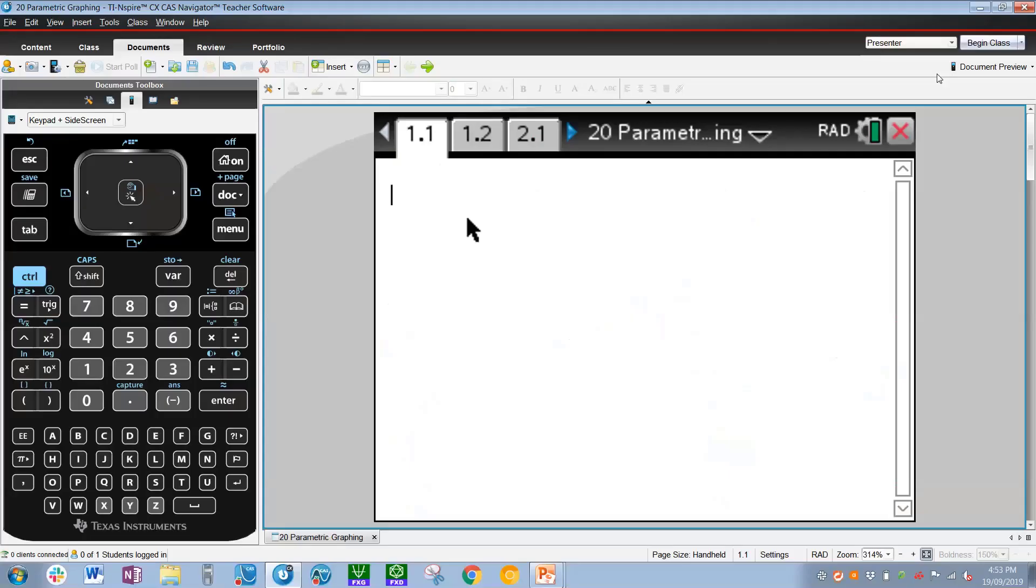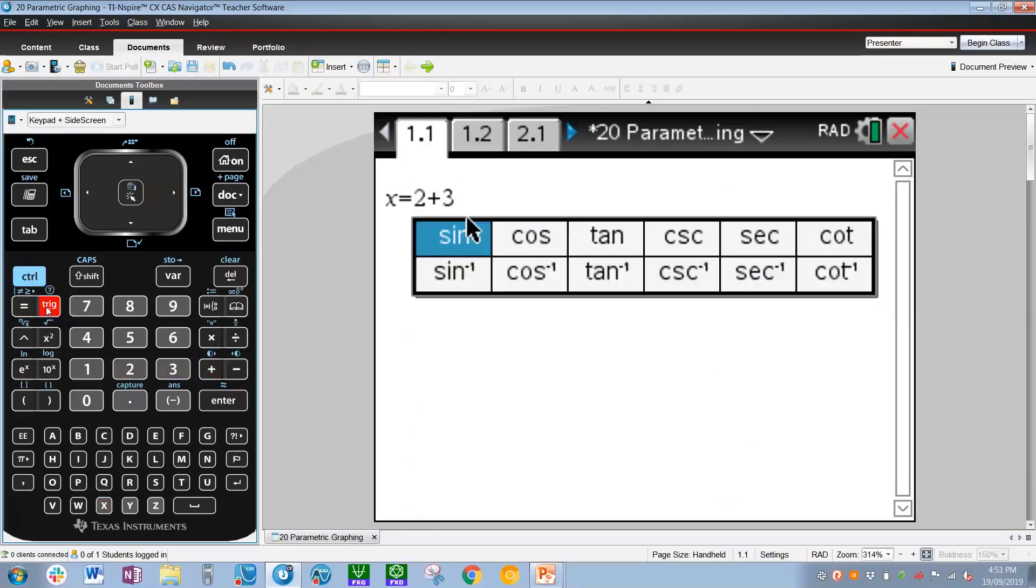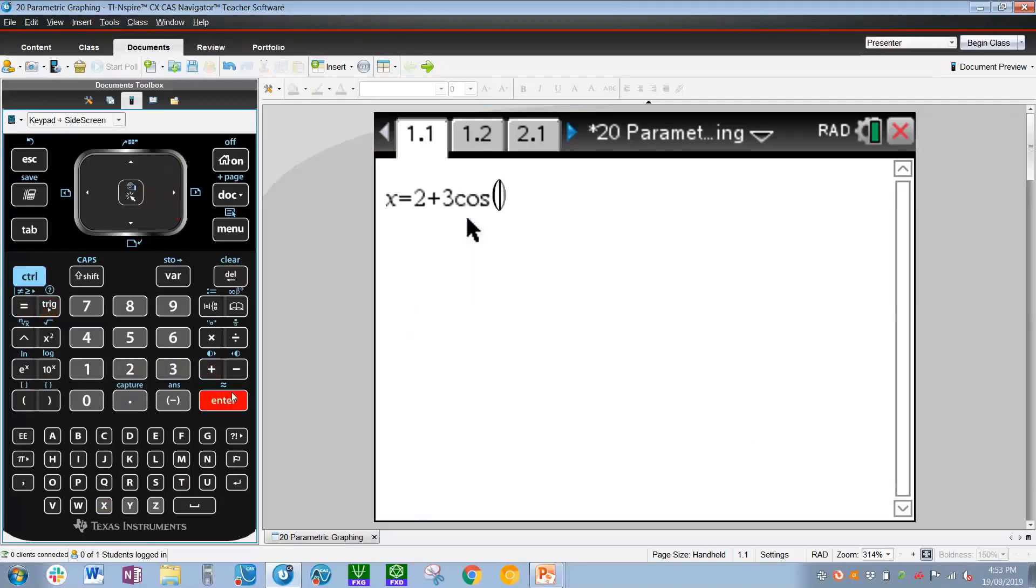To get started on this question, I'm simply going to type in the equation that we saw, which is x equals 2 plus 3. Press the trig button, press right to get to cos, enter, and then t, enter again. So we have the x equation entered in. Now let's do the same for the y equation. y equals 3 plus 2 trig sin and then t, enter. Now we've got these two equations written in, we can see that we have cos and sin in both of those equations, which means the Pythagorean identity would be perfect to use.